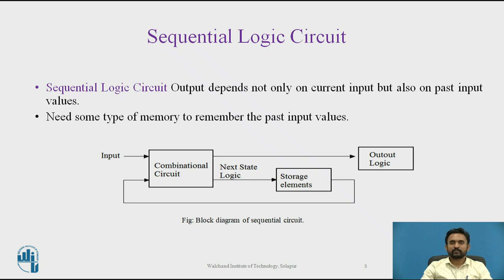Let us see what is a sequential logic circuit. Sequential logic circuit output depends not only on current input but also on past input values, so it needs some type of memory to remember the past input values. Combinational logic circuits are memoryless digital logic circuits whose output at any instant in time depends only on the combination of its inputs. This means the sequential logic circuits are able to take into account their previous input state as well as those actually present.